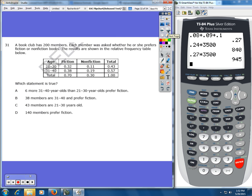Number 31. A book club has 200 members. Each member was asked whether he or she prefers fiction or nonfiction books. The results are shown here. Which statement is true? If you notice the answers A through D are asking a lot about the total number of people and not the decimals or the percentages. So we're actually going to figure out how many people fit into each category.